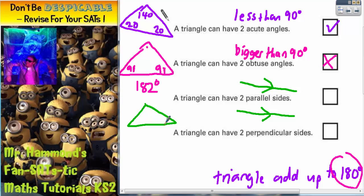Parallel sides can't ever meet. So that's worth writing: parallel sides can't ever meet. So it is going to be impossible for a triangle to have two parallel sides which don't meet. That's going to be impossible.